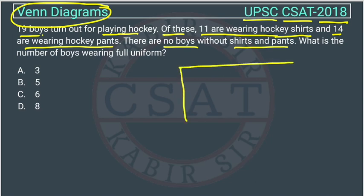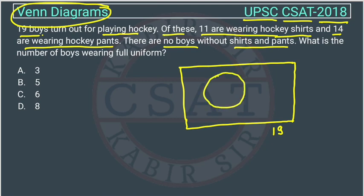19 boys are playing hockey. We will draw the Venn diagram. The total number is 19. This circle is representing the hockey shirts and this other circle is representing the hockey pants. We can label the regions A, B, C, and D.